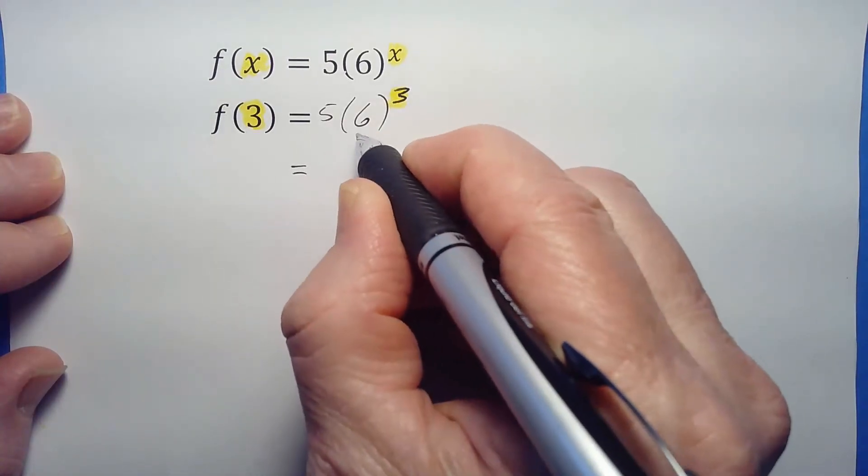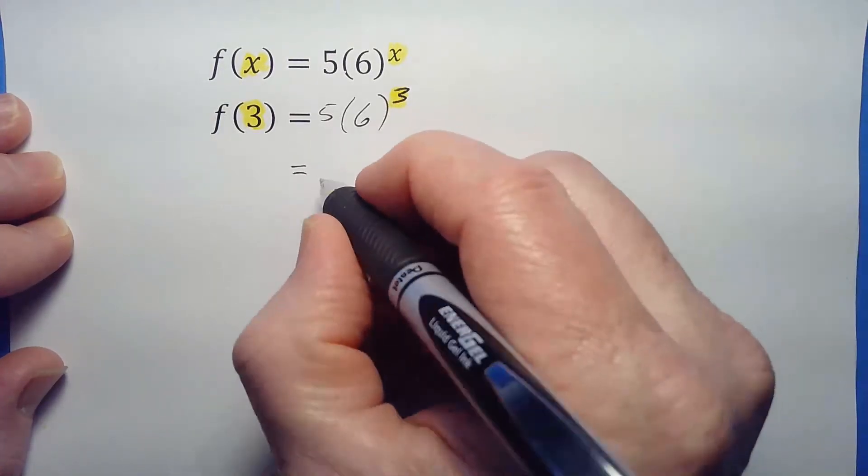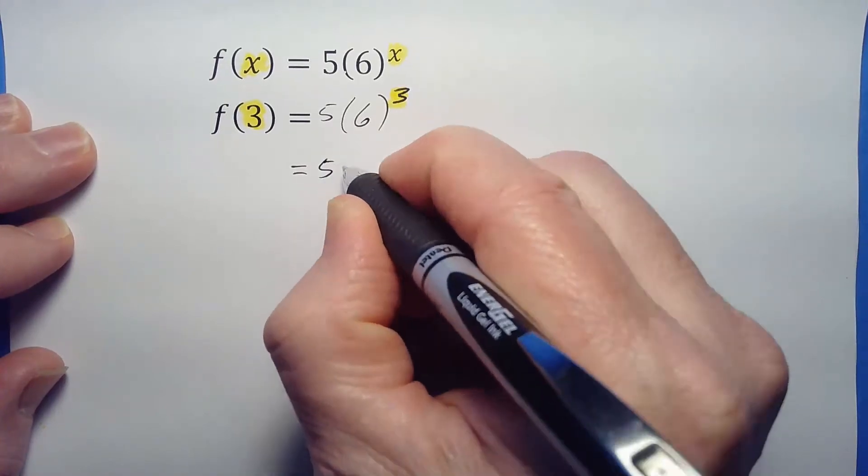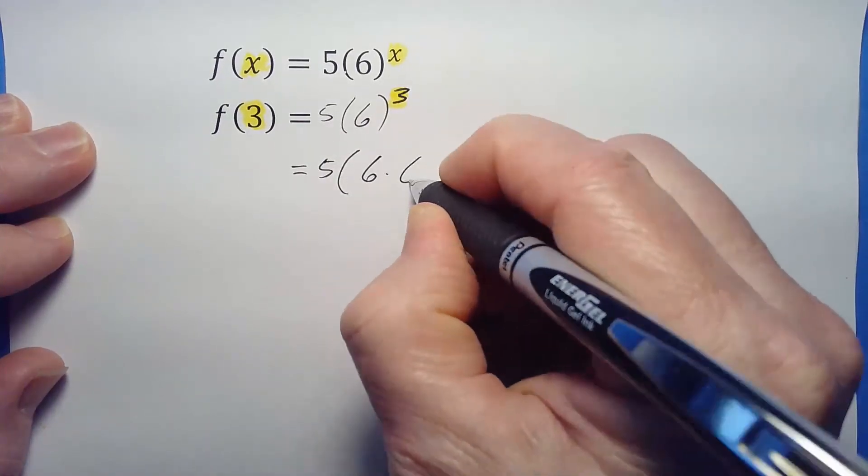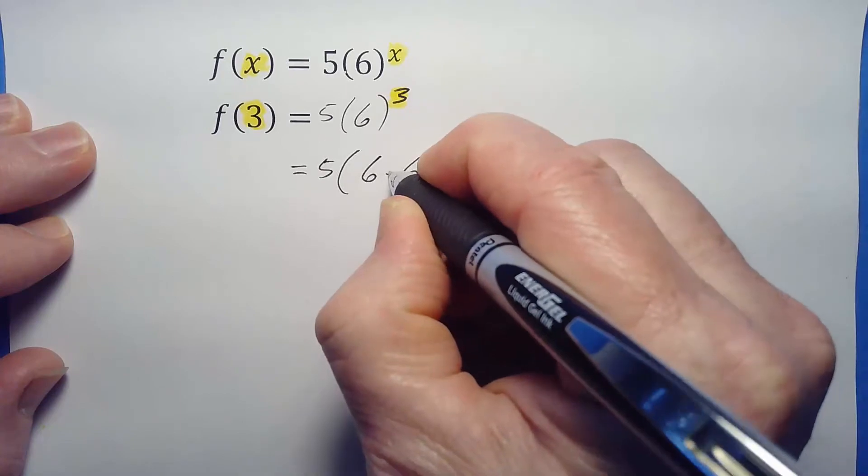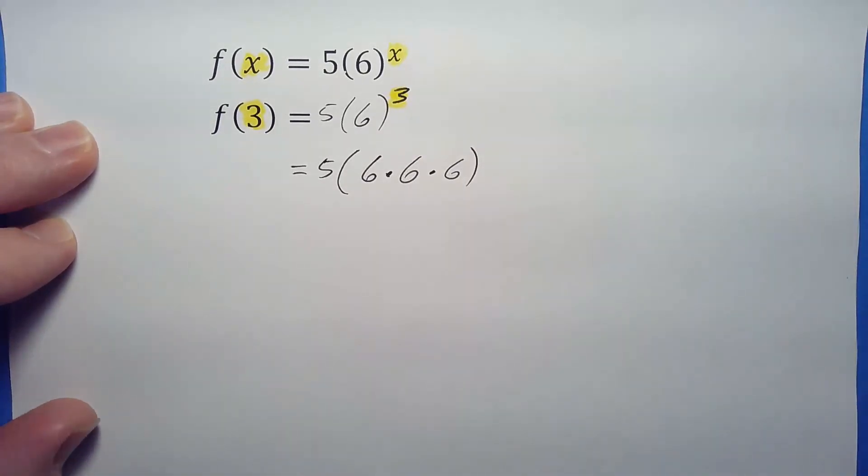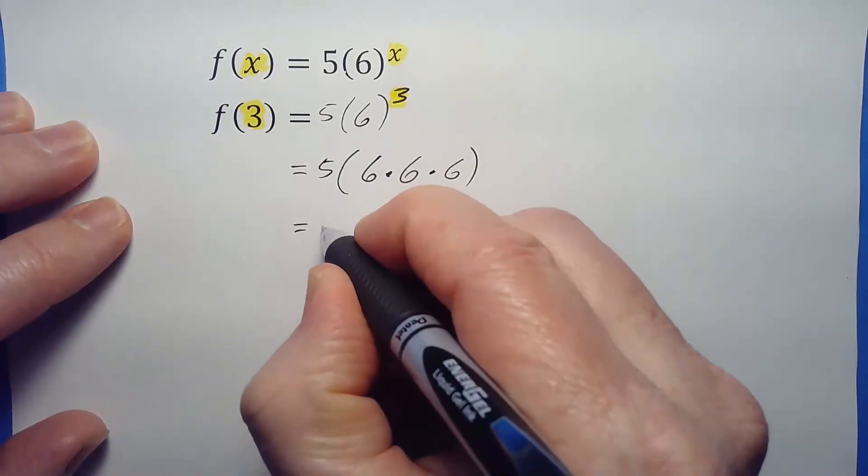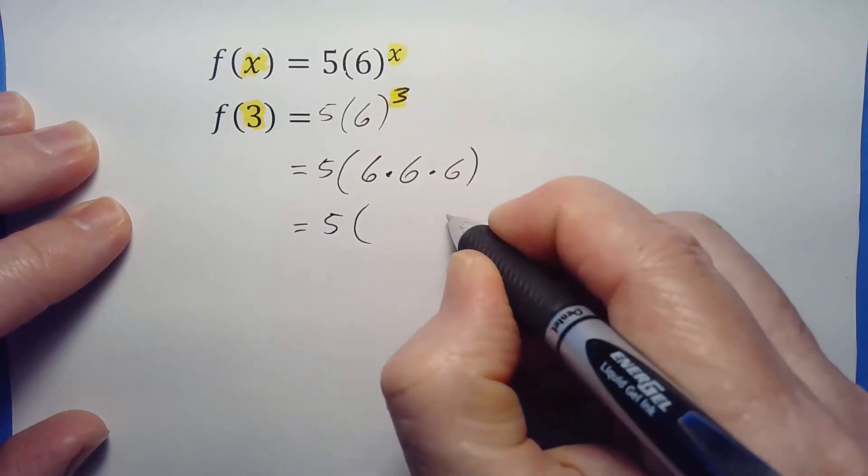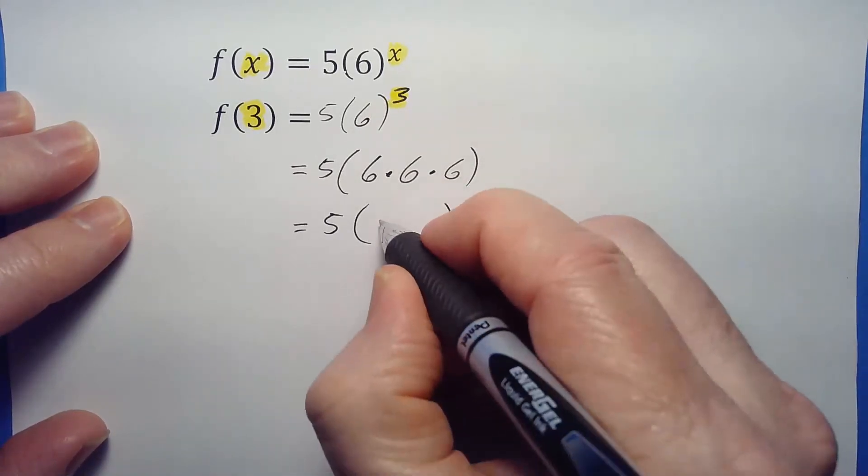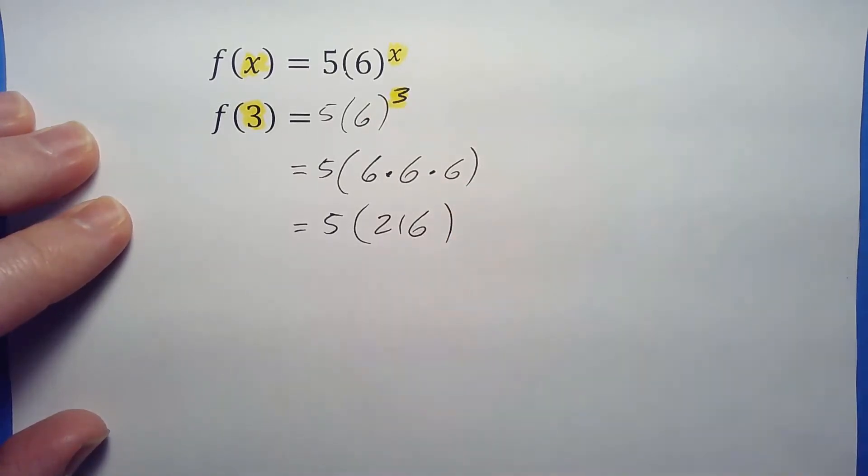This is 5 times this base to the third. So 5 times 6 times 6 times 6—6 cubed. Really important to do this with some scratch paper. Don't try to do this in your head, it's way too hard.